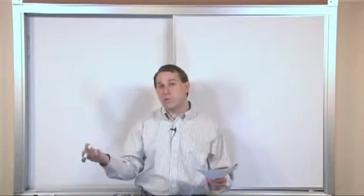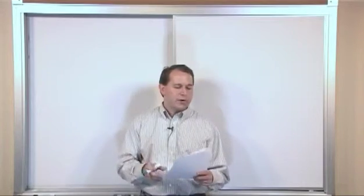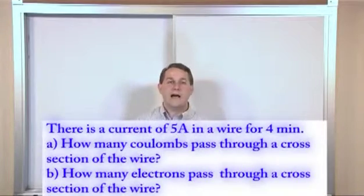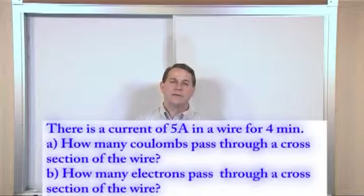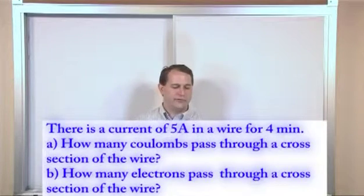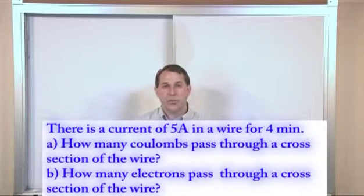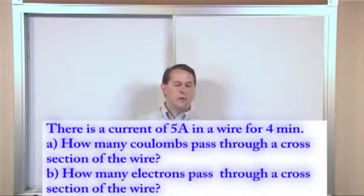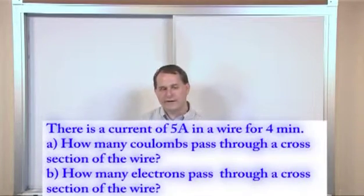Make sure you understand the units and we'll see why in just a minute. The first problem says there's a current of 5 amps in a wire for 4 minutes. Part A asks how many coulombs pass through a cross section of that wire, and part B asks how many electrons pass through a cross section of that wire.